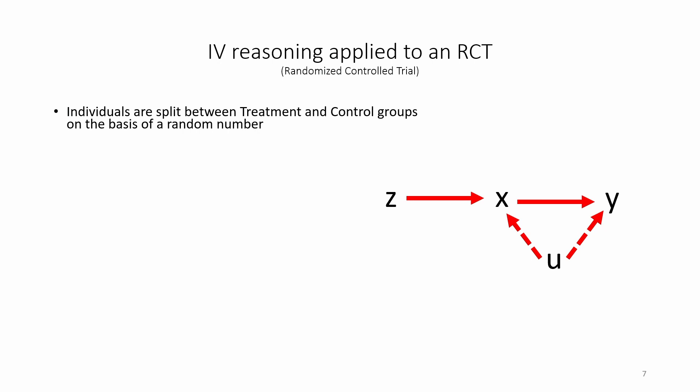Instead, we use an RCT setup. Z is the instrumental variable, Z corresponds to the random number. X corresponds to whether the individual is in the treatment group or the control group. Y corresponds to the outcome, for example, health outcomes.